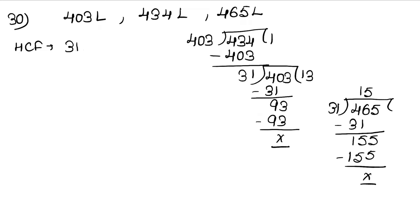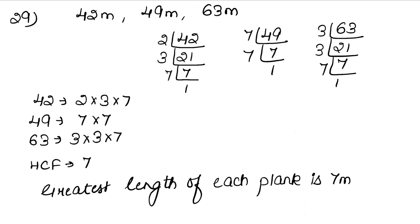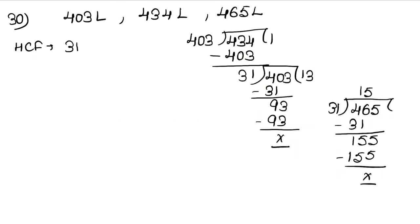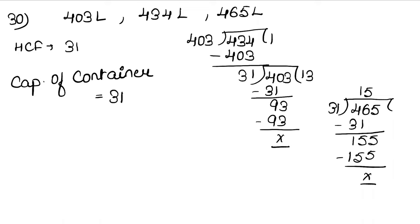So the maximum container capacity is 31. Since we needed to find the capacity of the container that measures the milk exactly with no remainder, the answer is 31 liters.